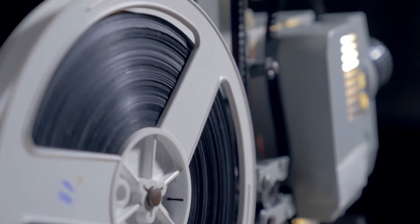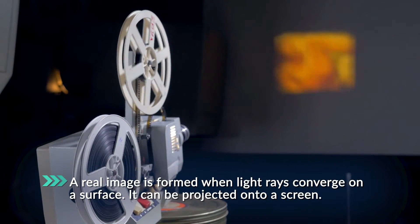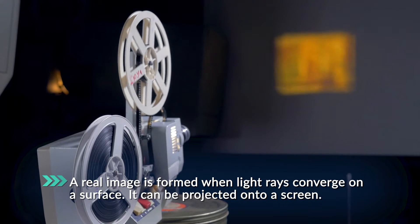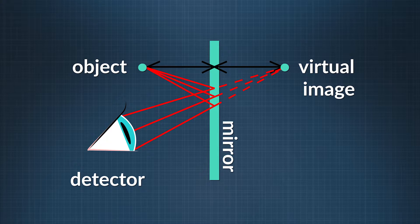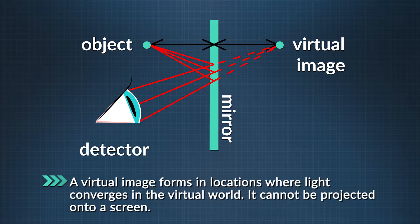When you have a specular reflection in a mirror — the shiny kind — you see an image of the object, but it can be one of two different types. One is a real image, which is when the light rays converge on a surface. A real image doesn't mean you can touch it, but it can be projected. The second kind is called a virtual image. A virtual image forms in locations where light converges in the virtual world behind the mirror, so to speak, and the image cannot be projected onto a screen.